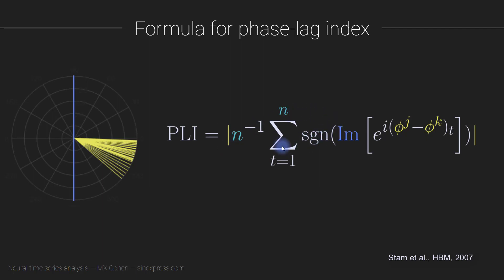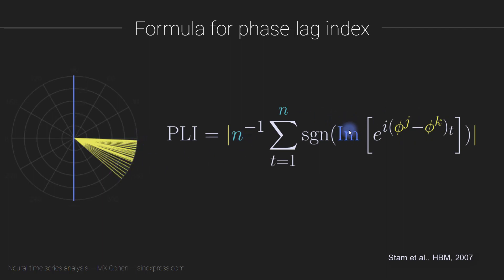Before averaging, there are two additional transformations. First, instead of using the difference vectors themselves, we project them onto the imaginary axis — we take just the imaginary part of each vector, which is its projection onto the imaginary axis. So rather than the full vector, we get just the imaginary component — a dot along the imaginary axis. This converts all these vectors into a collection of values along the imaginary axis.